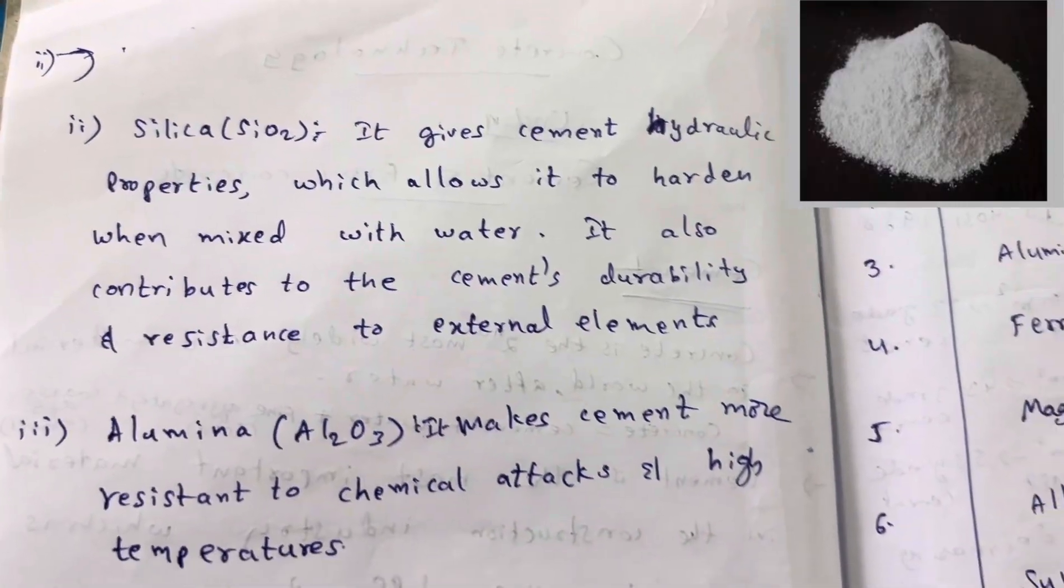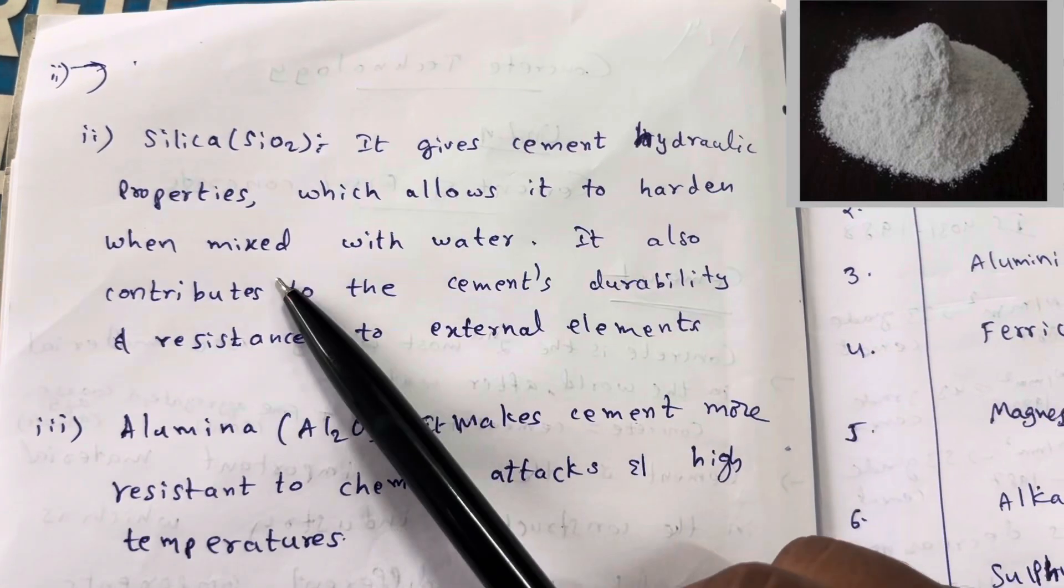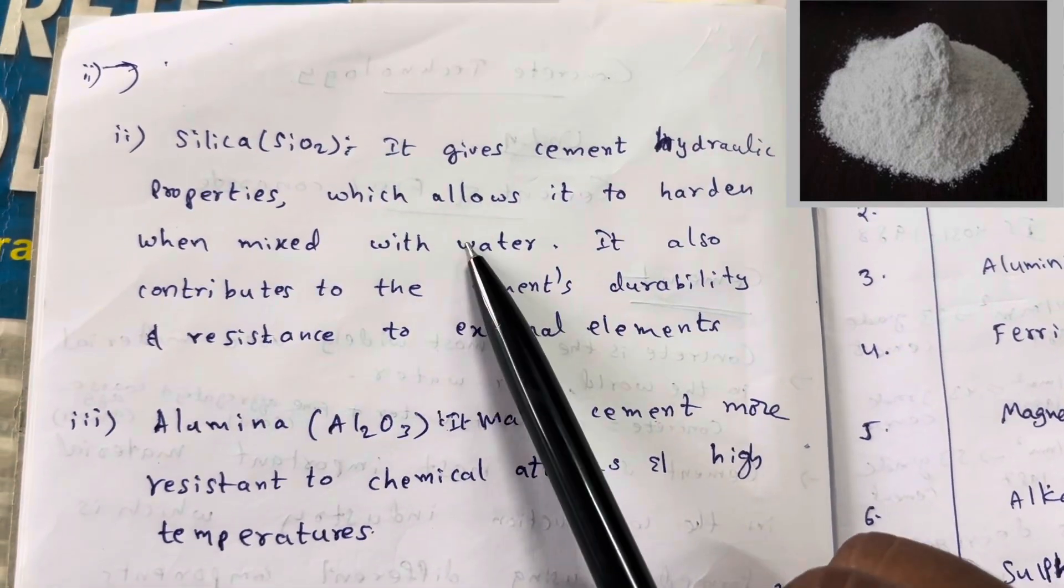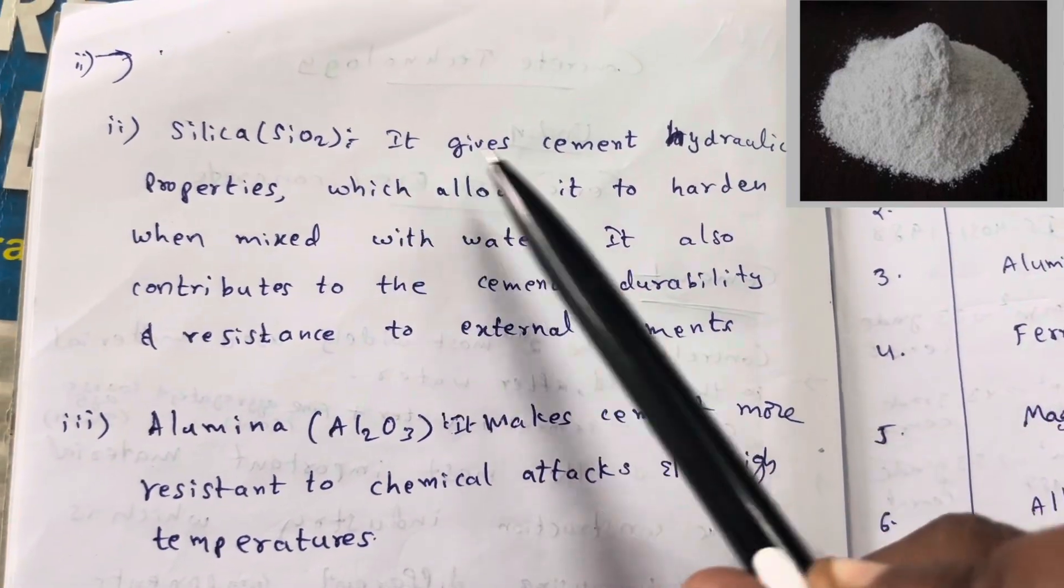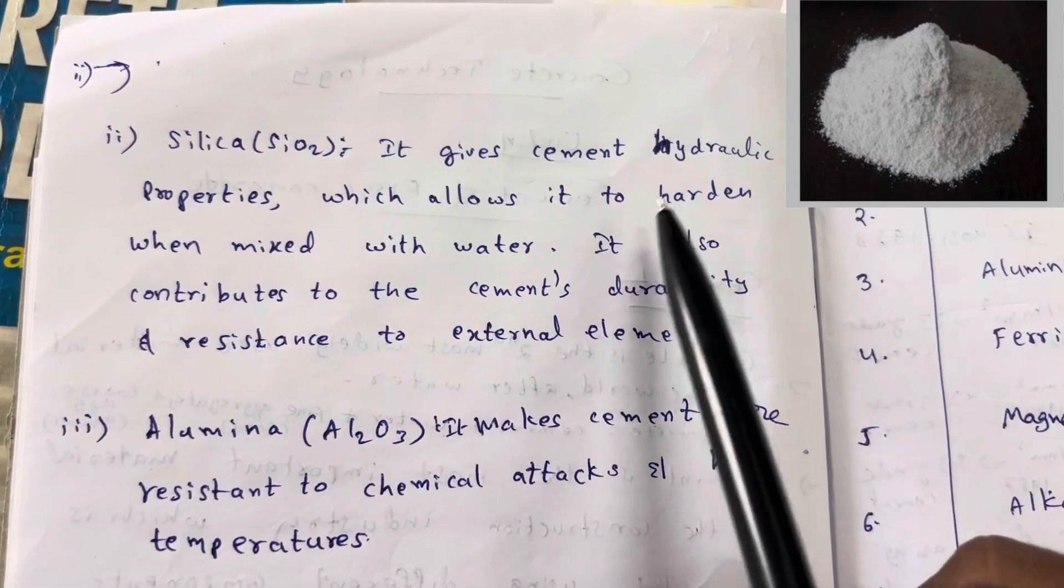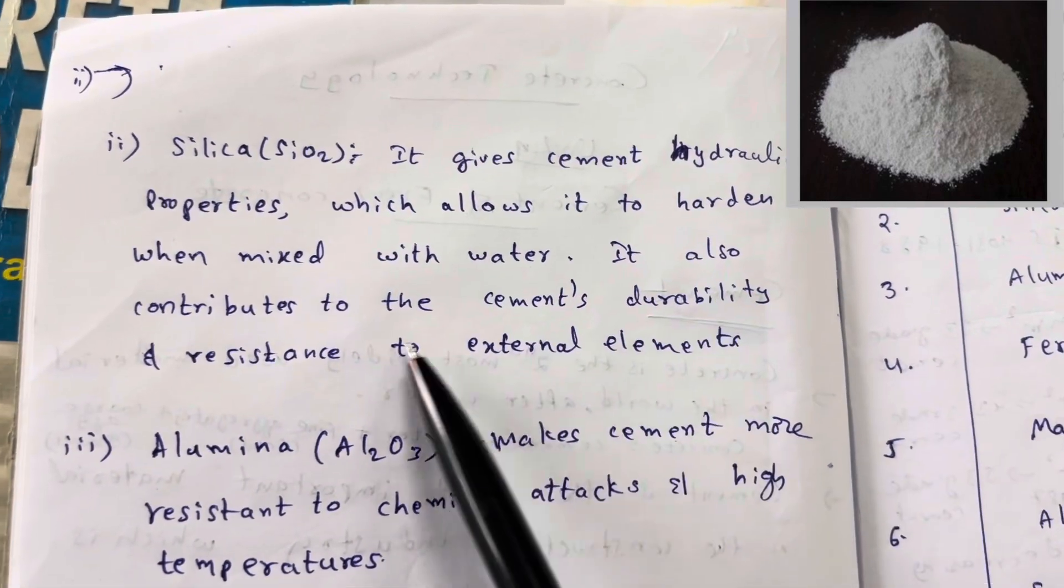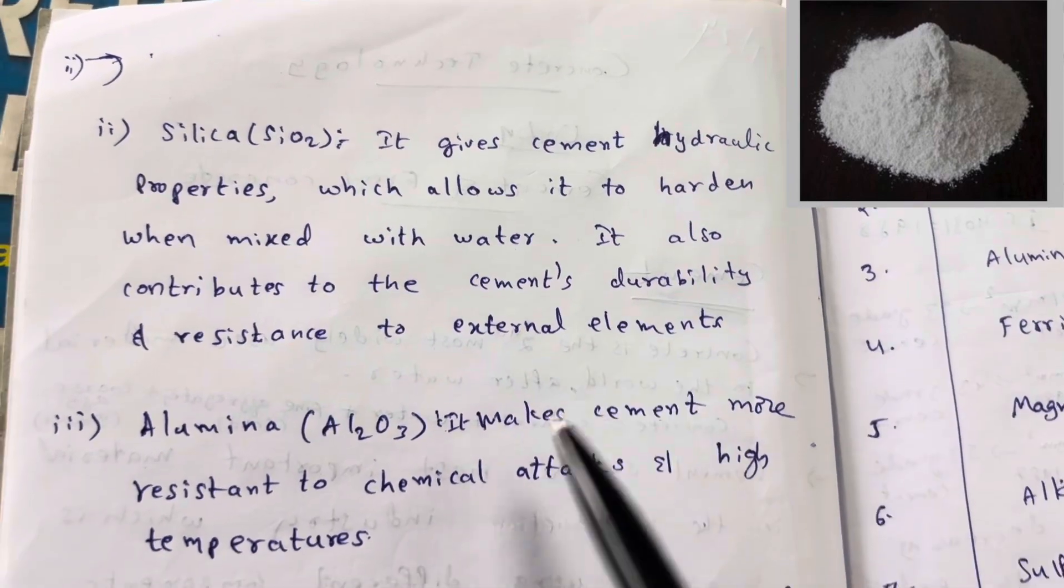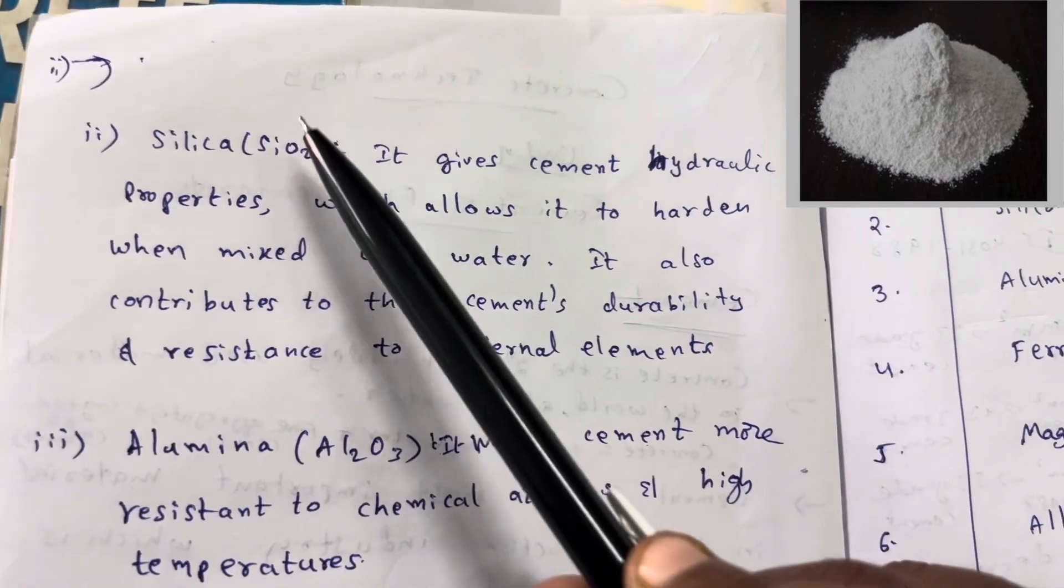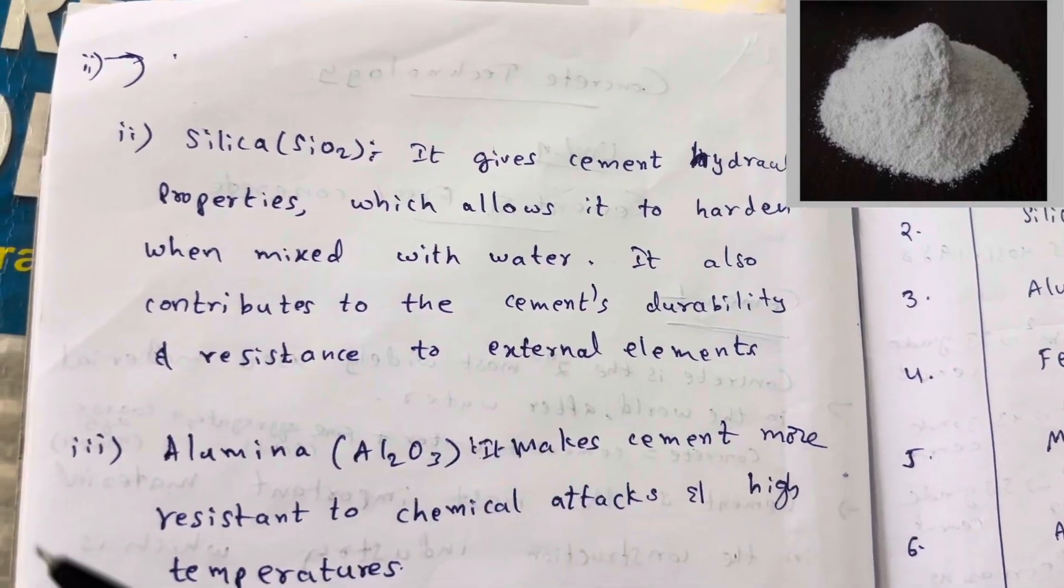Next, silica SiO2. It gives cement hydraulic properties, which allows it to harden when mixed with water. When cement is mixed with water, SiO2 allows the cement to get hardened. It also contributes to the cement's durability and resistance to external elements.